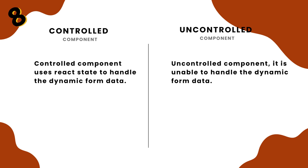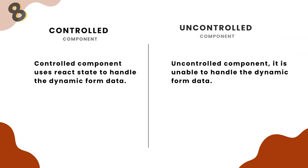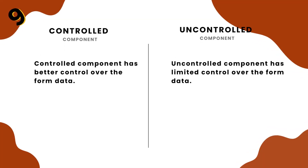Number 8: a controlled component uses React state to handle the dynamic form data, while an uncontrolled component is unable to handle the dynamic form data. Number 9: a controlled component has better control over the form data, while an uncontrolled component has limited control over the form data.